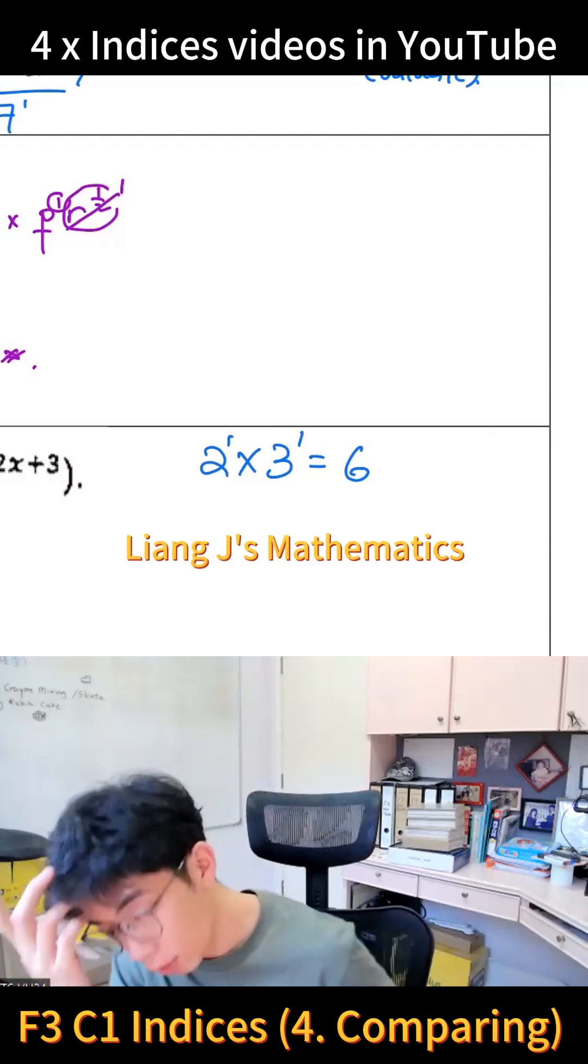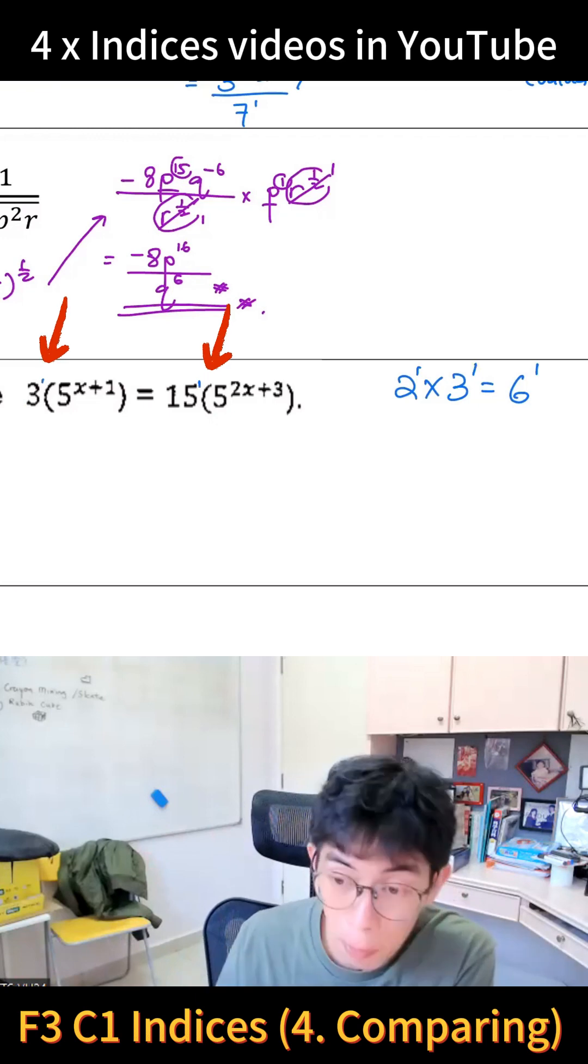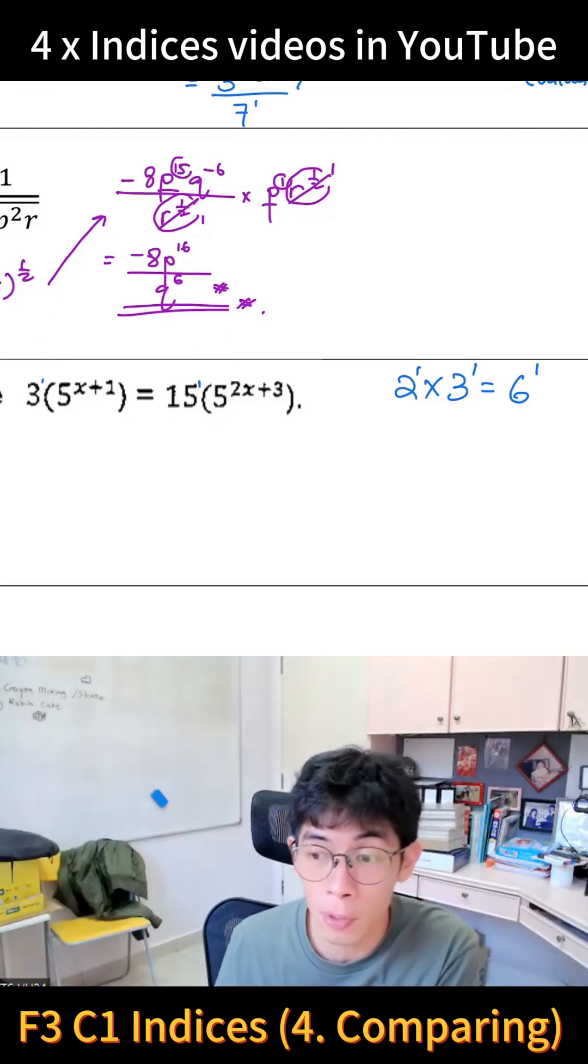Okay, so you get 6 power 1. Now, do you notice this is 3 power 1 and this is 15 power 1? So it's impossible that you can multiply them together. That's impossible.